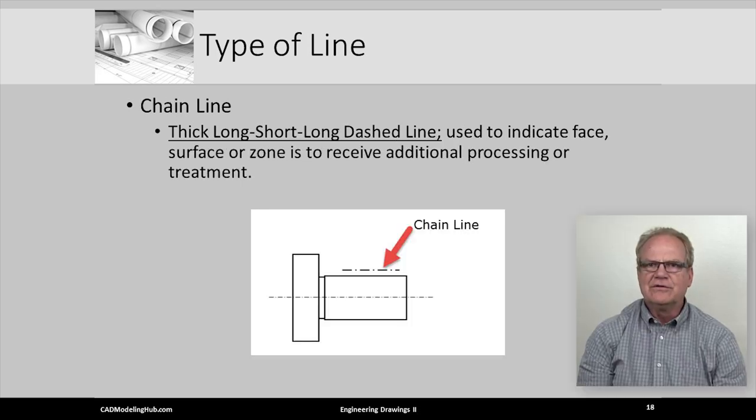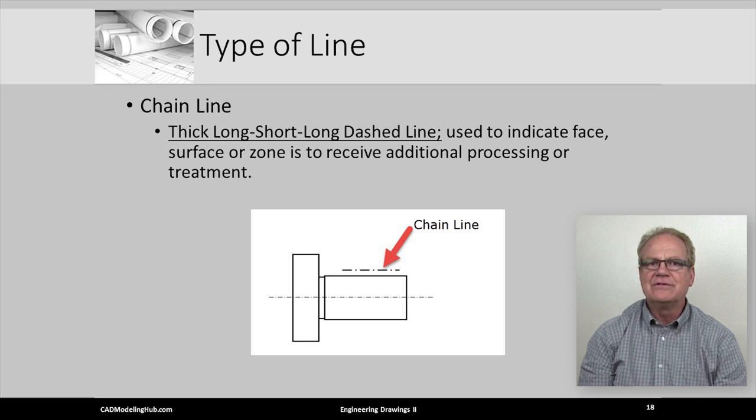Frequently surfaces or faces or portions of surfaces and faces of a component being designed need additional processing or treatment. For example, the area may need to be a smoother finish or a special coating like anodizing or chrome plating or painting. A chain line is used to designate the portion of the surface or face to receive special processing. The chain line looks like a center line being comprised of long, short, long dashes, but has a thicker width than the center line.